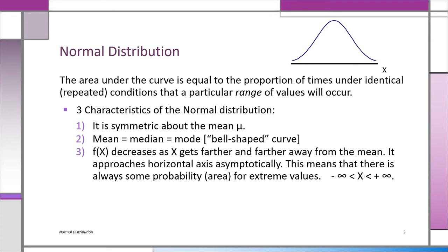There's another way of understanding this. If IQ is normally distributed with a mean of 100, you have very few people with IQs over 150 and very few with IQs below 50. The bulk is always going to be near the 100.